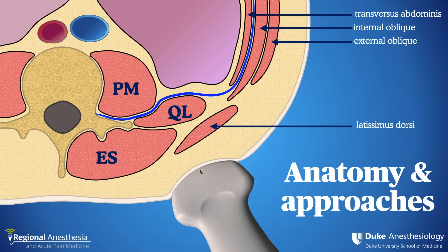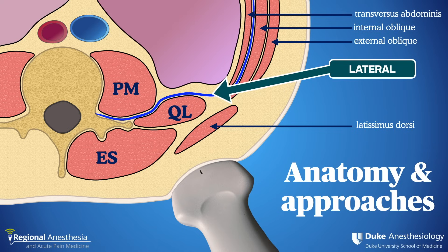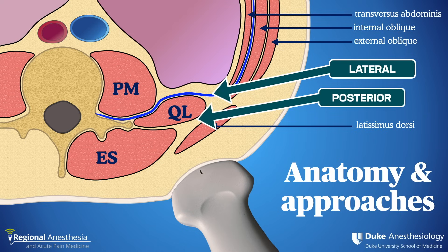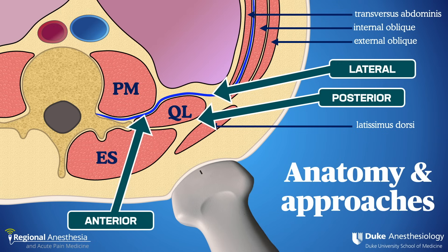This gives us several opportunities to block these nerves, and the three common approaches are named due to their relation to the QL muscle. The lateral approach is very similar to a TAP block, where local anesthetic is placed at the lateral aspect of QL. The posterior approach targets the fascial plane posterior to QL with the hope that the local spreads medially and/or anteriorly. The anterior approach targets the intermuscular fascial plane between QL and psoas major.